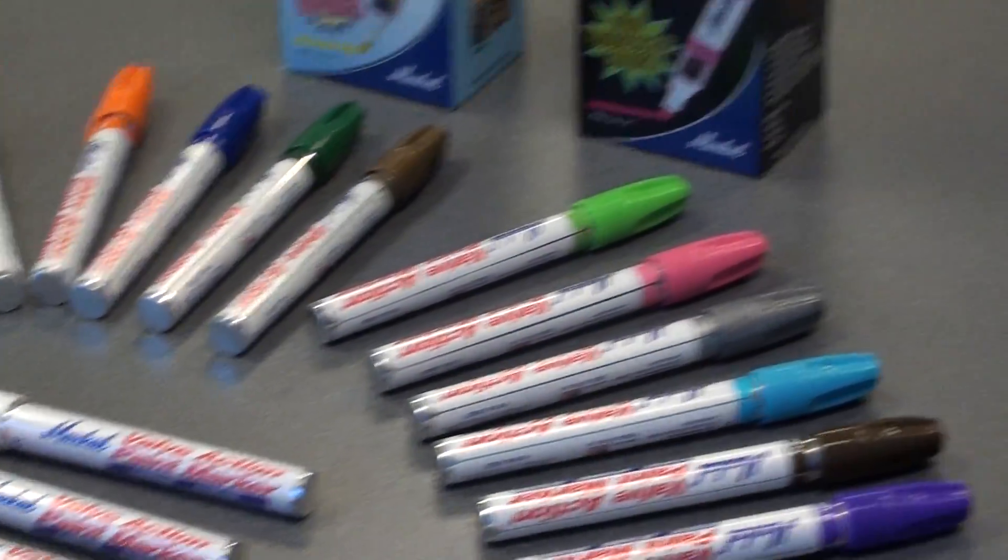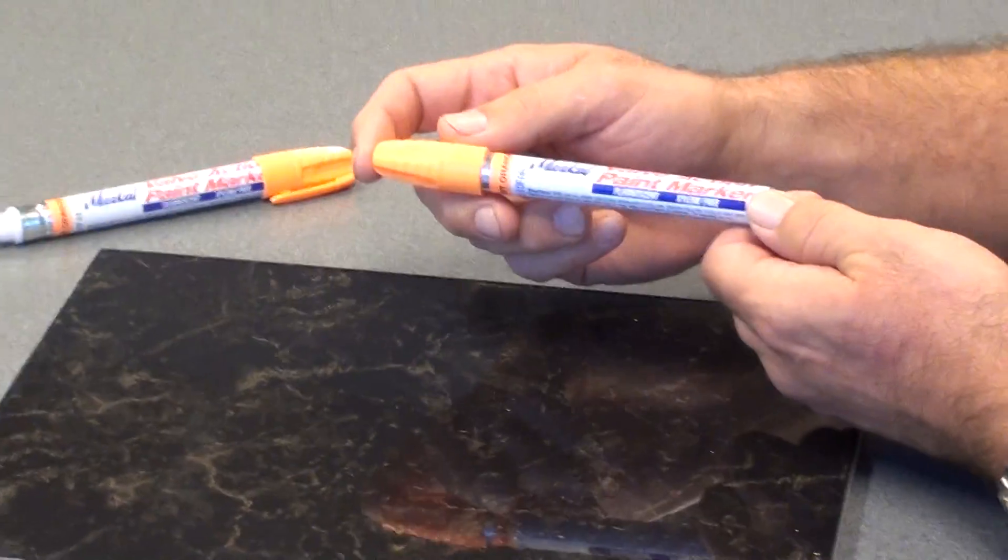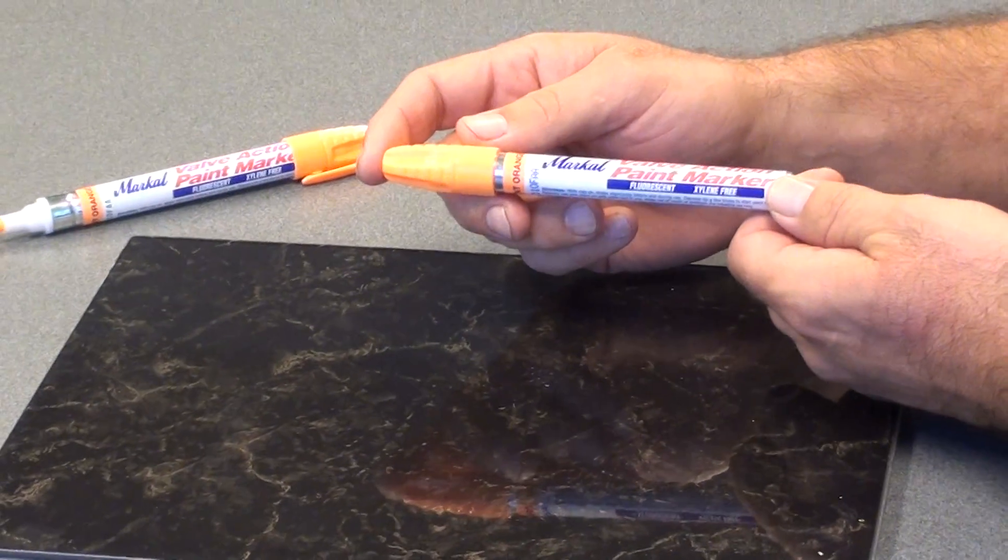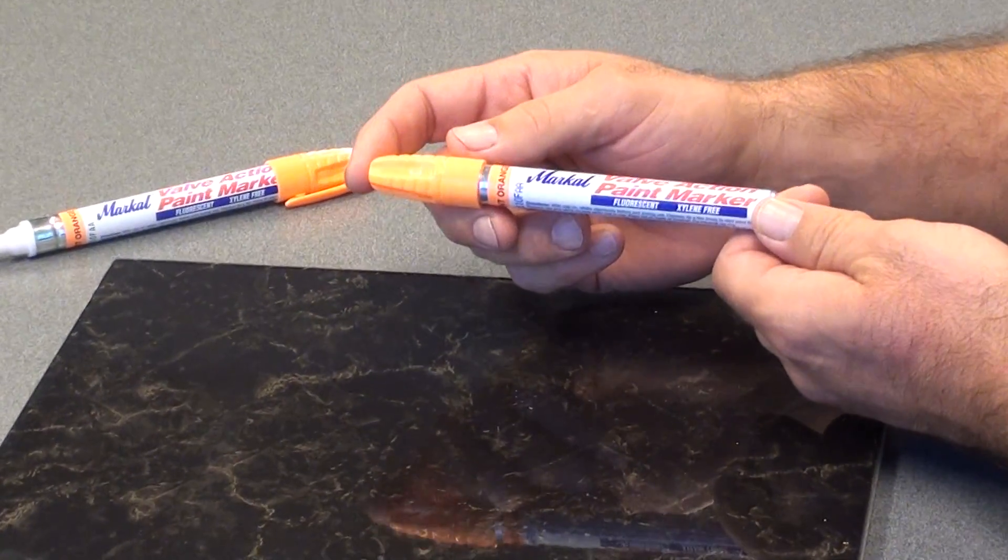This is the Markall Valve Action Paint Marker, Fluorescent Colors. It's a liquid paint marker intended for industrial use.